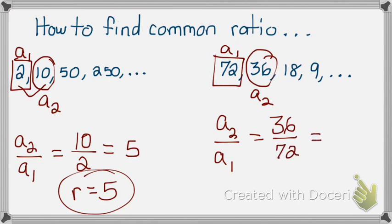And if you have a TI-84 Plus calculator, you can press Alpha, Y equals, Enter, and type in the fraction 36 over 72 to get one half. So therefore, my common ratio is 1 over 2. That's it!